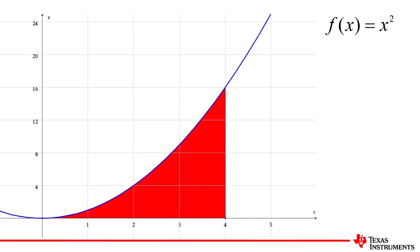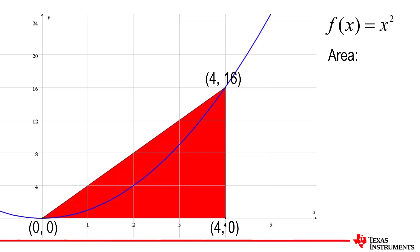A very simplistic approximation would be to create a triangle with one vertex at the origin, the other on the x-axis at x equals 4, and the third vertex on the function at the point 4, 16. The area of the triangle would be a half times the base, 4, times the height, 16, which gives us an area of 32 units.